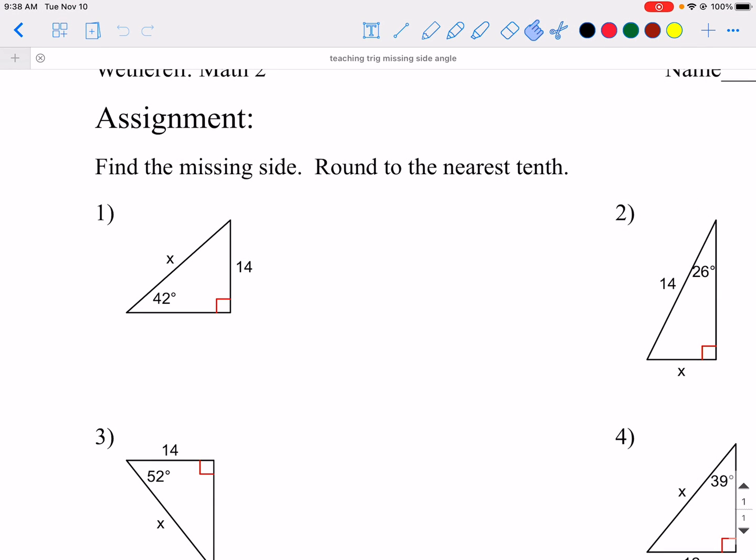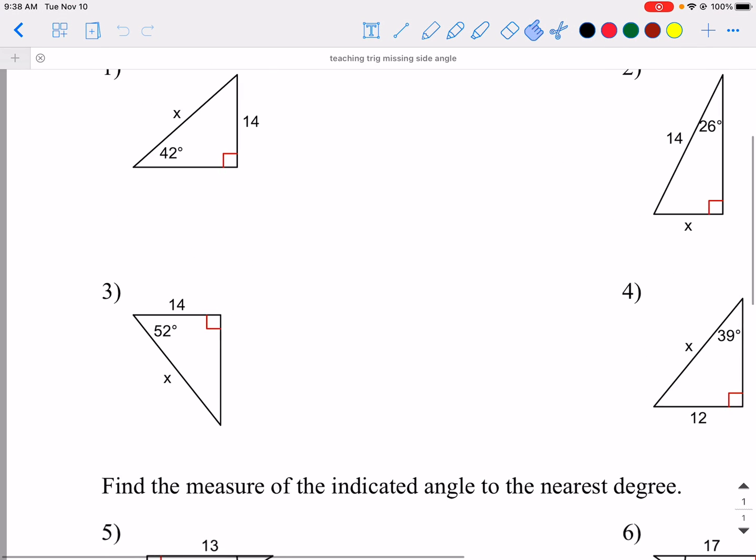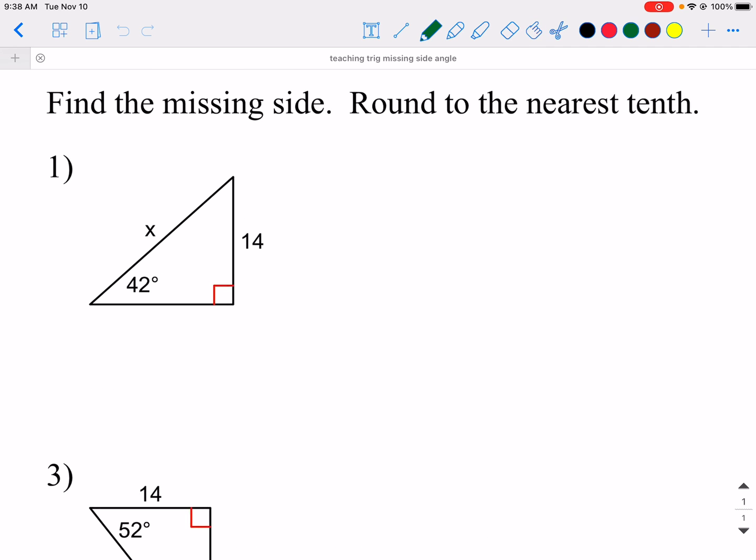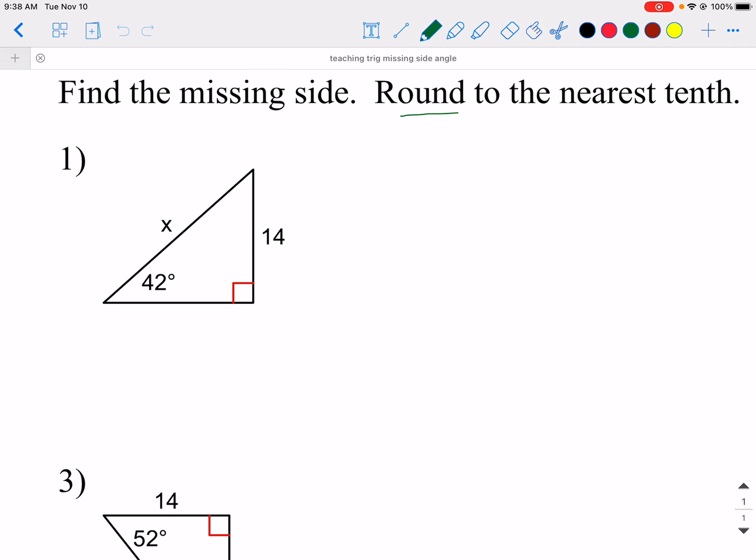Hey, Ms. W here. I'm going to show you how to find a missing side using trig. Okay, so I've got this first example, and the directions say round to the nearest tenth. If you remember, the first thing you have to do is identify your opposite, adjacent, and hypotenuse.